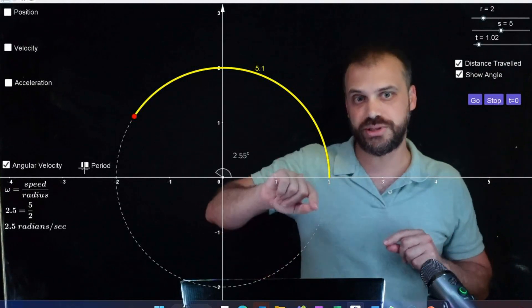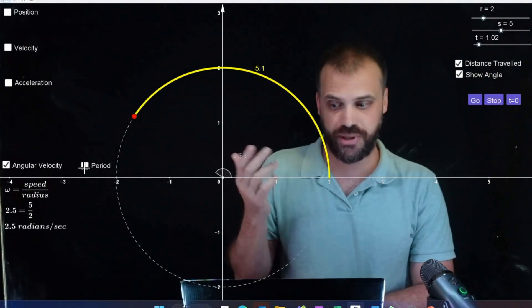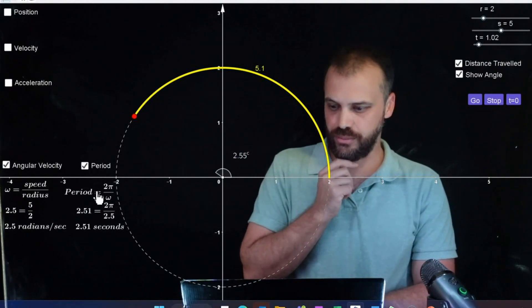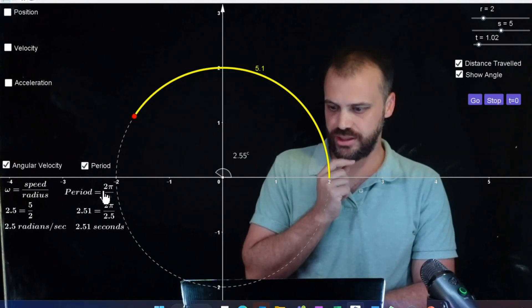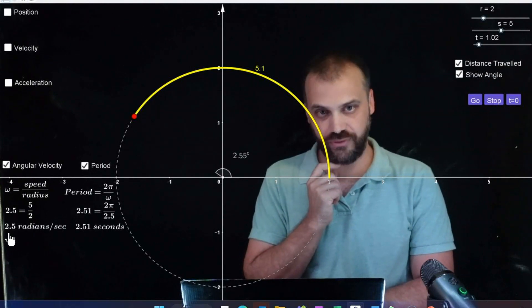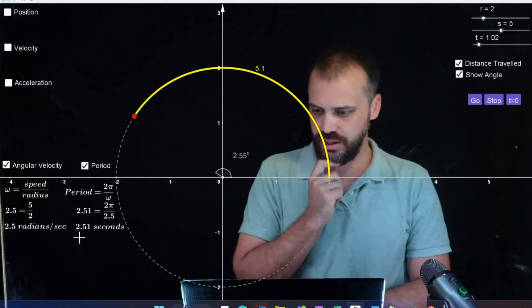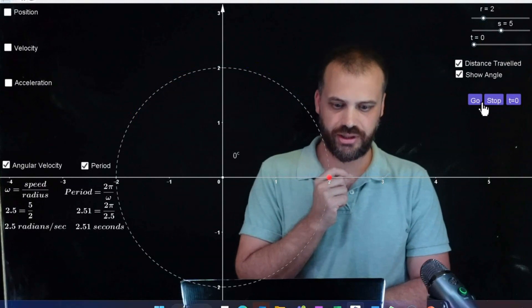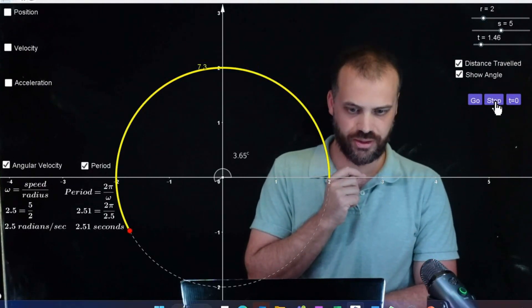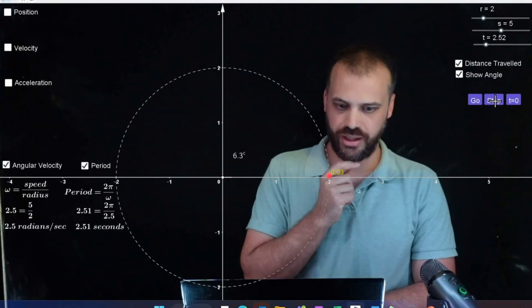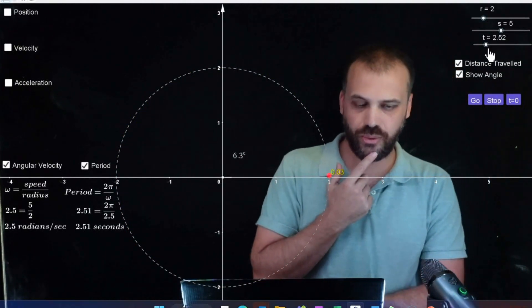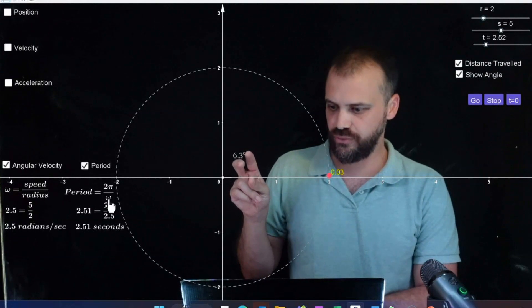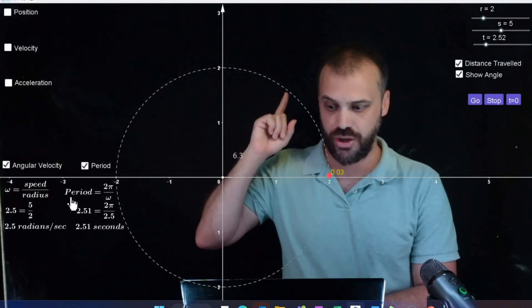Alright, so how long will it take to get around the circle once? That's our period. And that's equal to 2π over the angular velocity. So at the moment, the time it's going to take to get around this circle is 2π over 2.5 radians per second, because that's our angular velocity. So it's going to take us 2.51 seconds to get around the circle. Let's find out. Go. Here we go, and stop. Okay, you can see it took us 2.51 seconds to get all the way around the circle. That is how we calculate our period. Easy, straightforward.